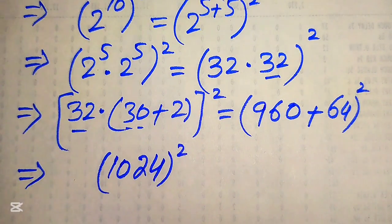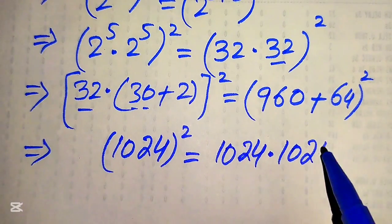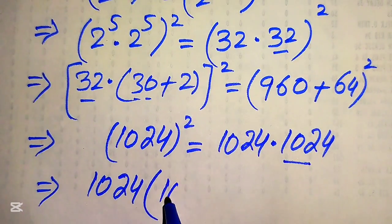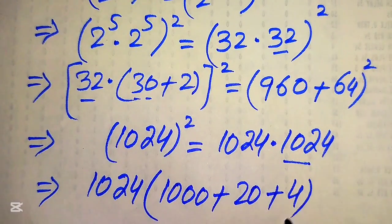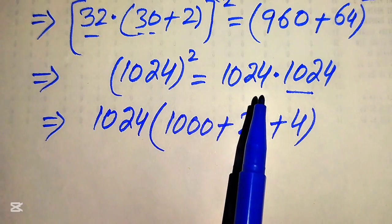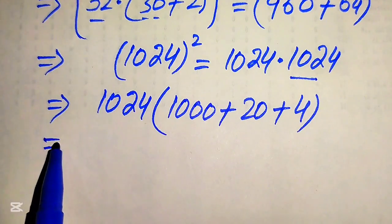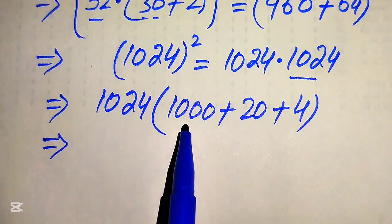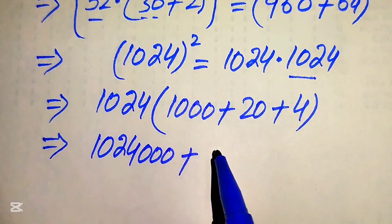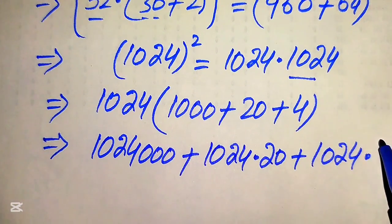In the next step we need to find the square of 1024, which means multiplying 1024 by 1024. We break this value as 1000 plus 20 plus 4. Because a calculator is not allowed, we use this smart method of multiplication. We multiply 1024 by each part: 1024 multiplied by 1000 equals 1024 with three zeros; plus 1024 multiplied by 20; plus 1024 multiplied by 4.